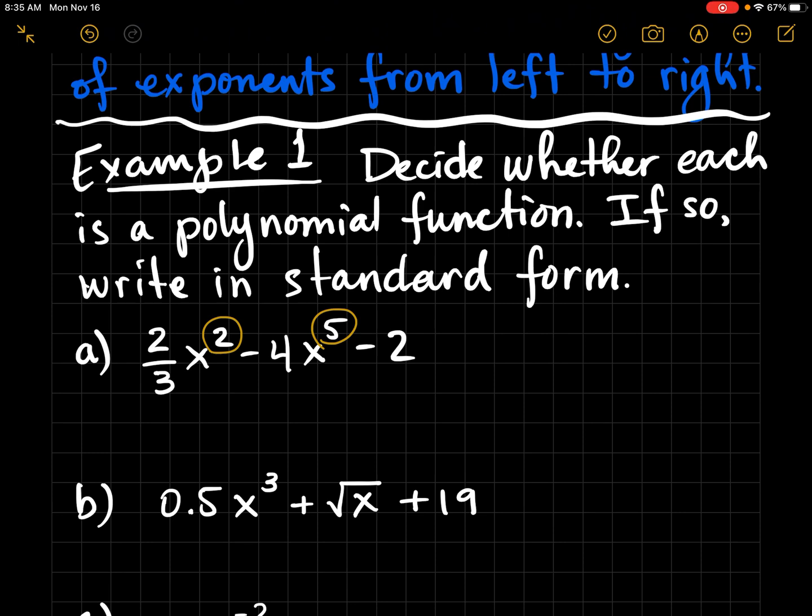So now I want to start with the highest exponent, which is five, and I bring that coefficient, write it first. Next would be two. And then finally, negative two.